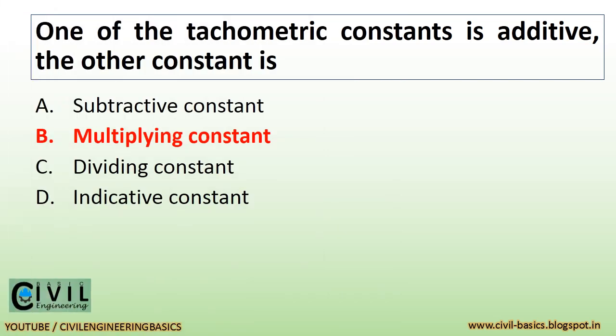One of the tachymetric constants is the additive constant; the other constant is the multiplying constant.